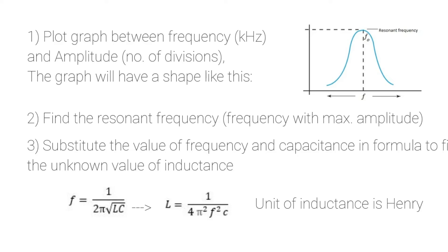And then you will substitute the value of frequency and capacitance in the formula to find the unknown inductance. And the original formula is f is equal to 1 upon 2 pi square root LC. And then you will rearrange the formula for the inductance. And by putting the value of resonant frequency f and capacitance, you can find the inductance. And its unit will be in Henry. Thank you very much.